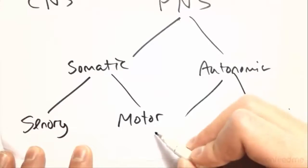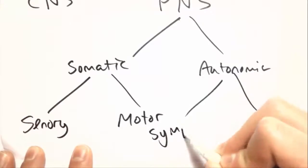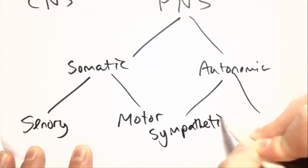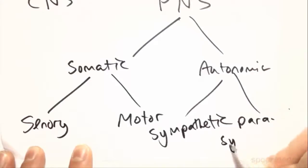The autonomic system is made up of the sympathetic and the parasympathetic. Crazy, chill. Heart rate goes up, heart rate goes down.